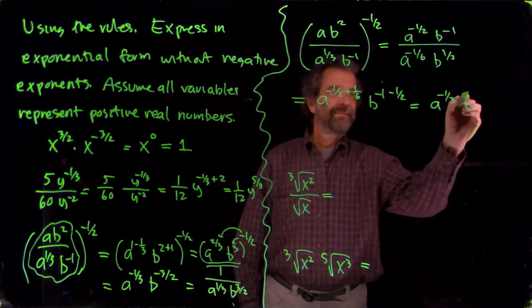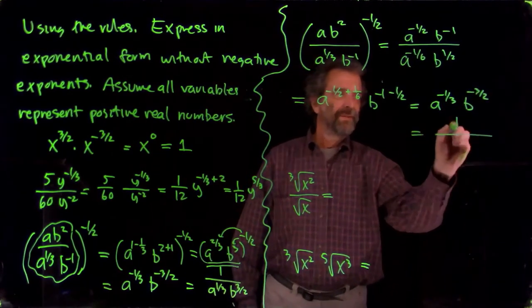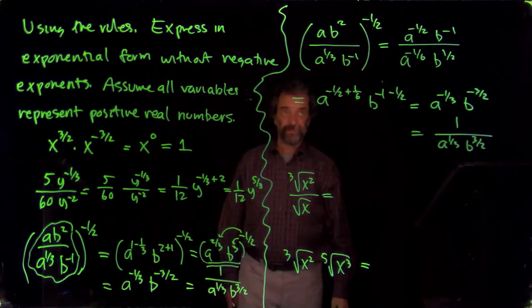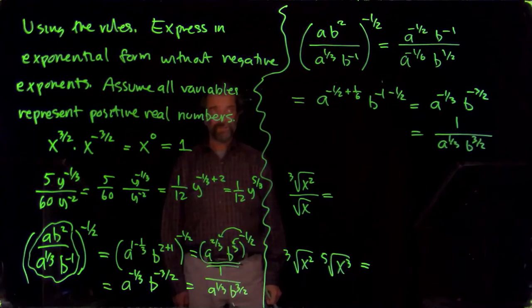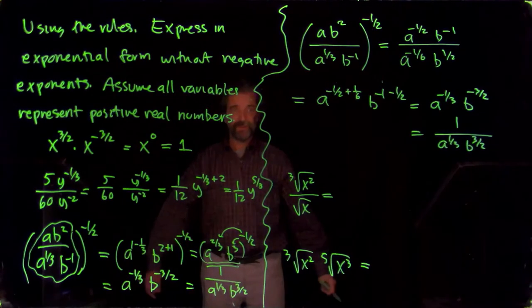And here's b. Minus one, minus one-half more as minus three-halves. We just saw that a minute ago. It's one over a to the one-third, b to the three-halves. So two different ways of getting at the answer. Hopefully I got the same answer. I did. I'm happy.